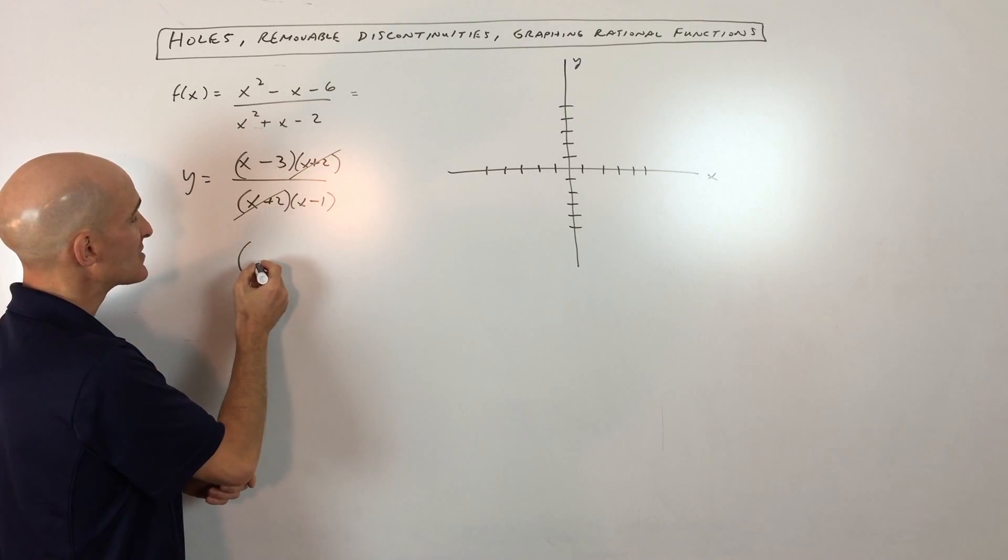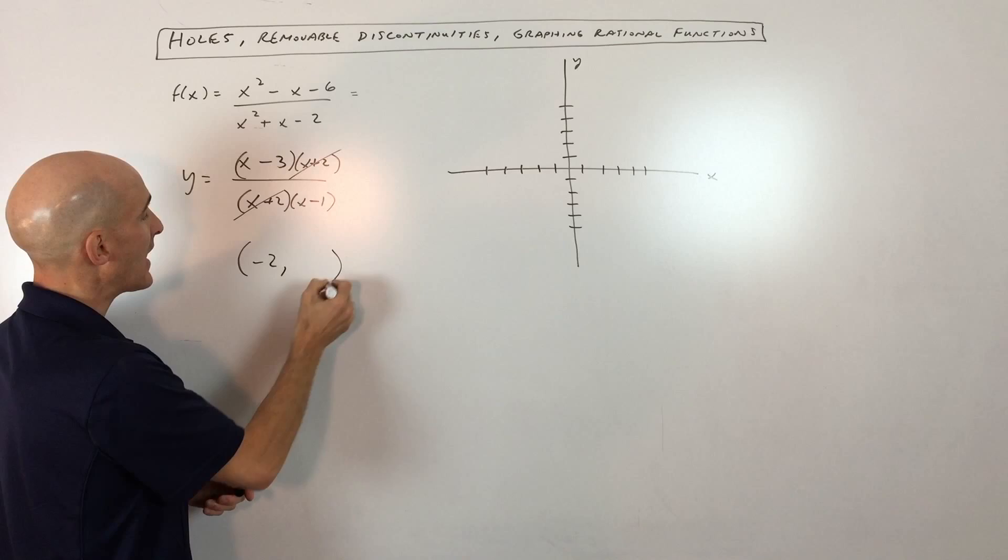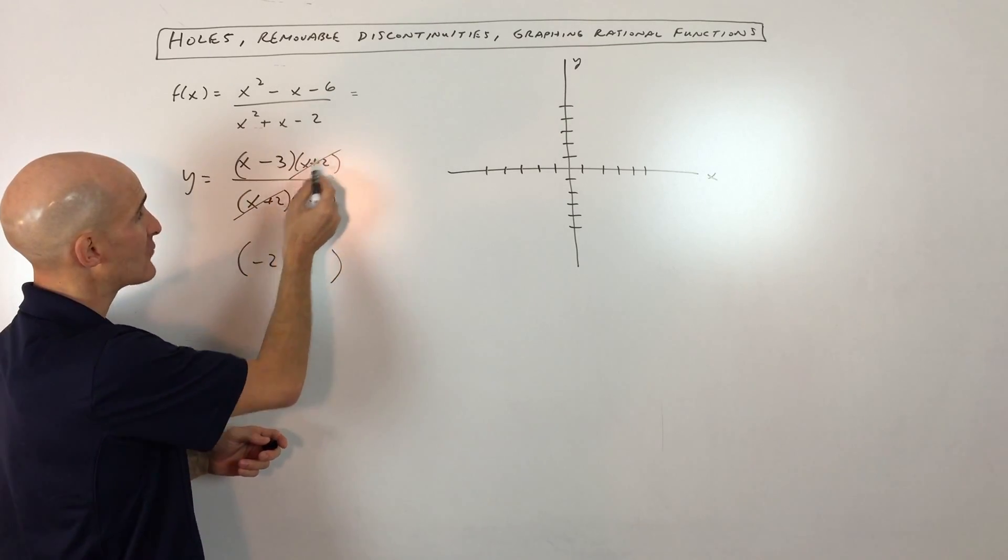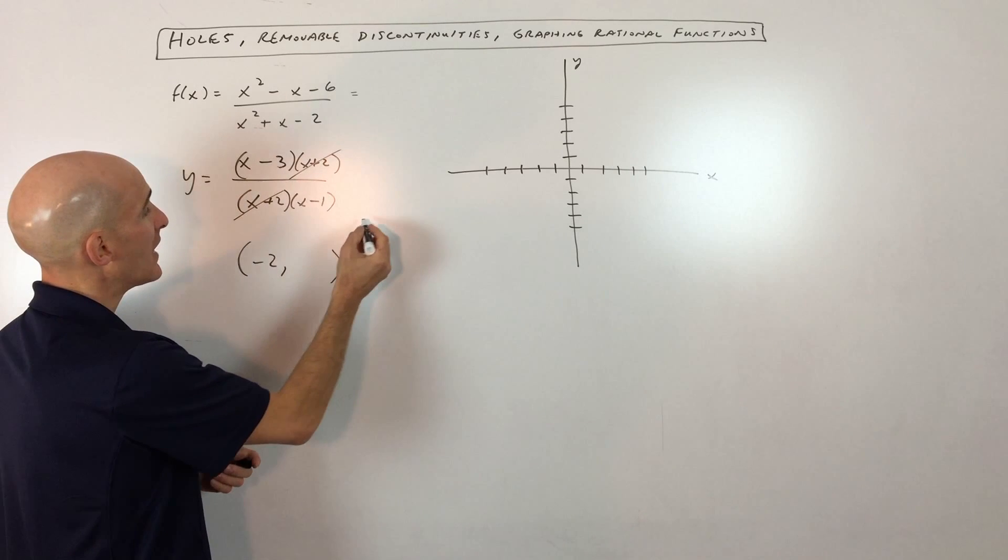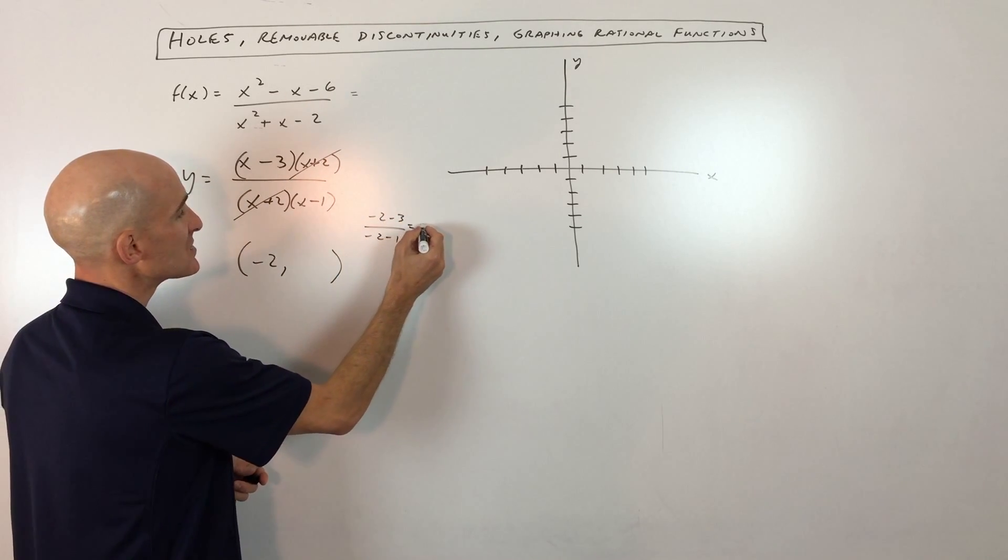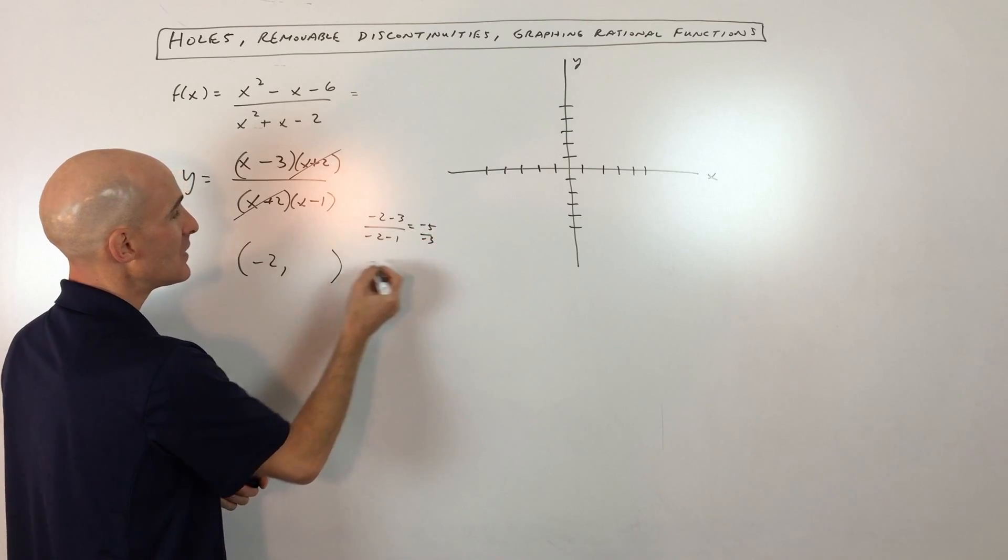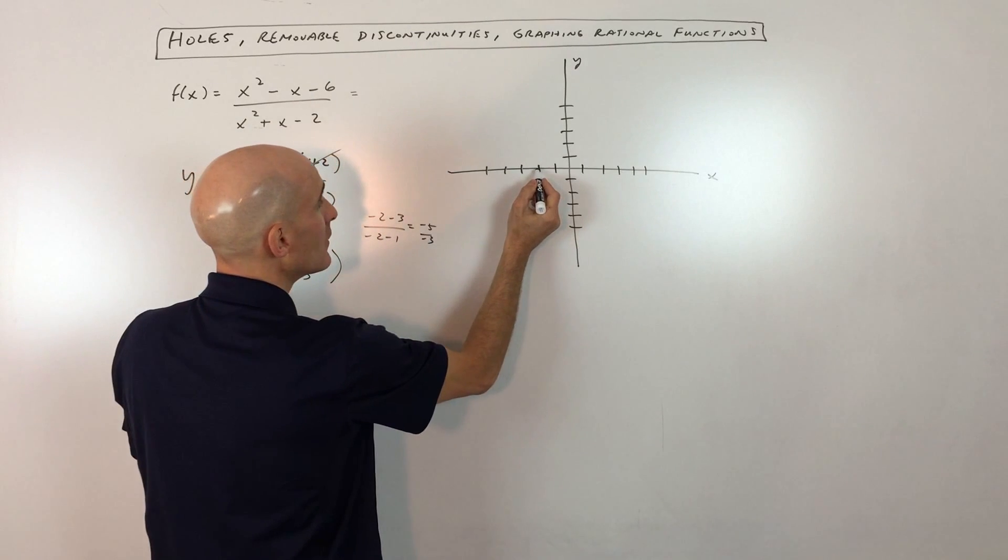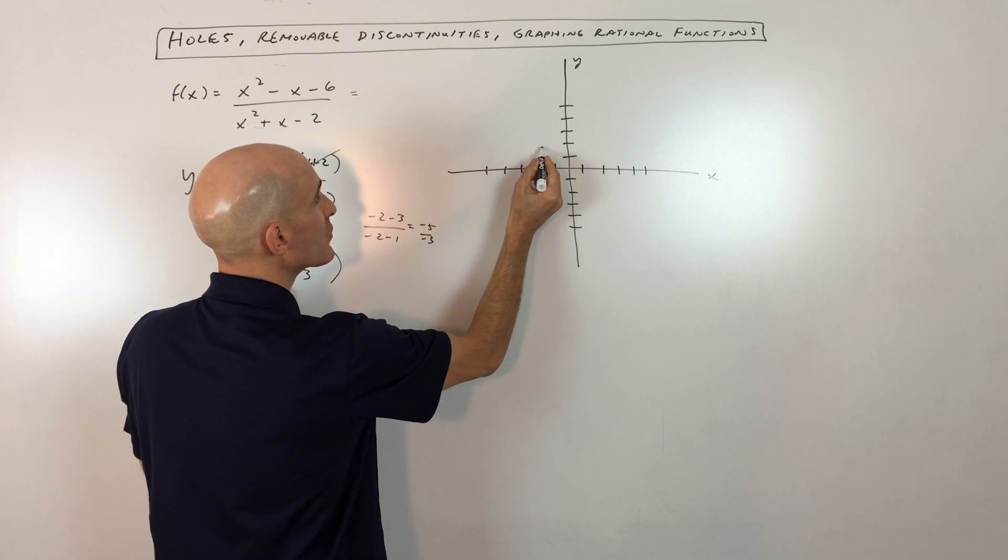You can see that negative 2 is going to make this equal to 0 or undefined. If you take negative 2 and put it into what's left over, after you cancel those factors out, you get negative 2 minus 3 over negative 2 minus 1, which is negative 5 over negative 3, which is a positive 5 thirds. So the location of our hole is negative 2, 5 thirds, which is like 1 and 2 thirds.